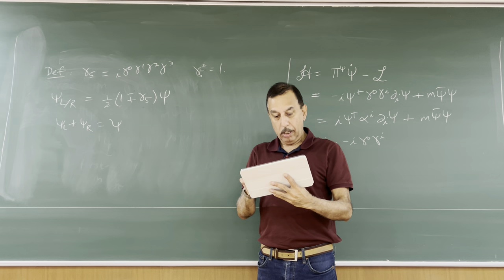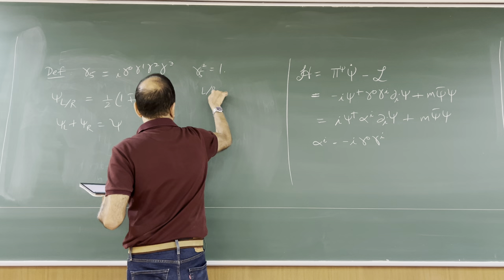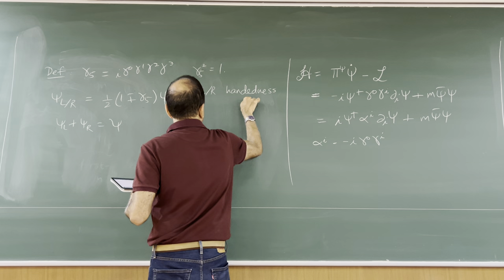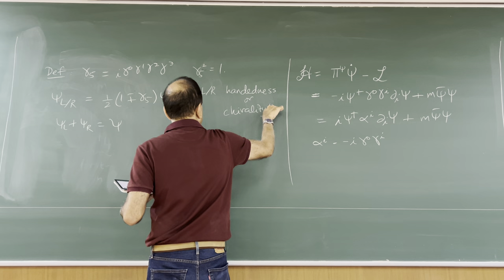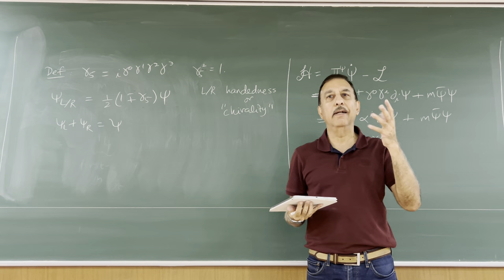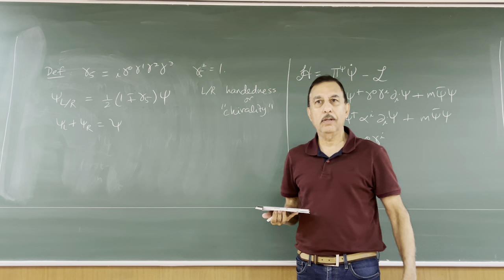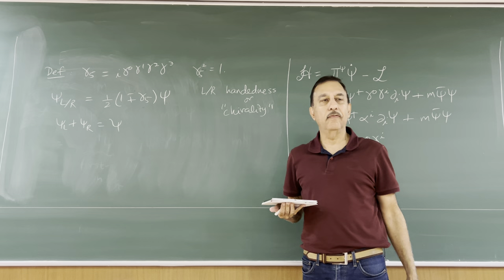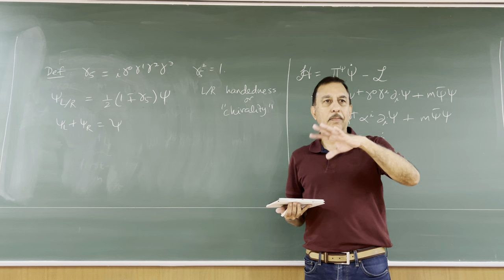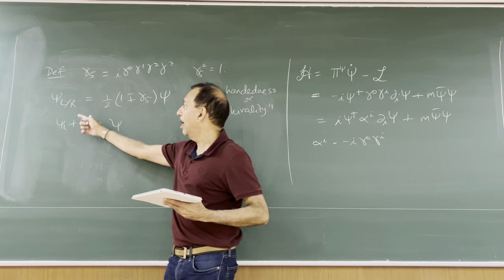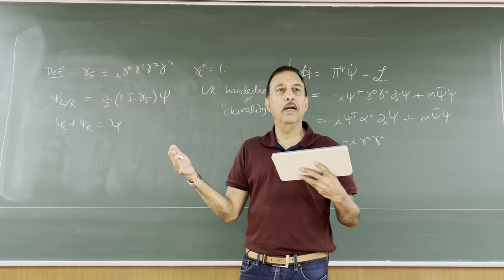This L and R is called handedness or chirality — chirality is just the Greek word for handedness. There is a physical sense in which these are left-handed and right-handed, which impacts the results of experiments: if you send in a left-handed versus right-handed fermion into a collision, they do something different. Sending in two left-handed fermions or one left-handed and one right-handed gives different answers — that is independent of convention.